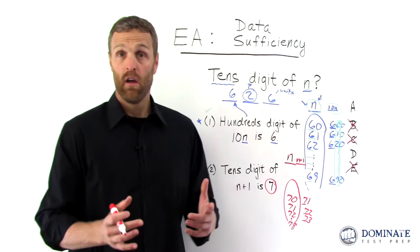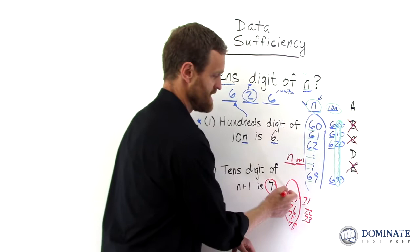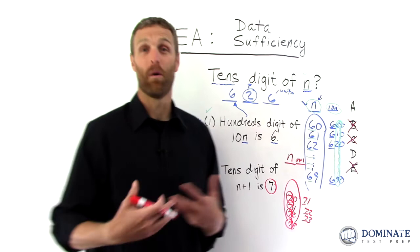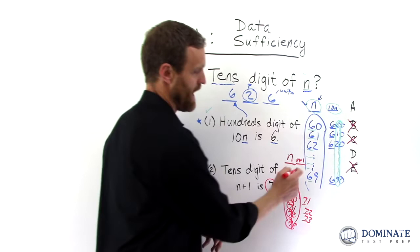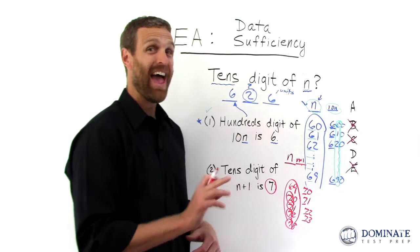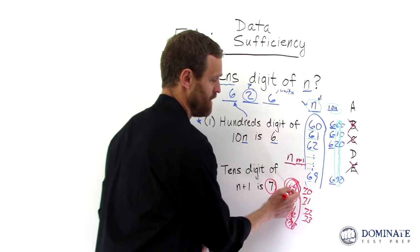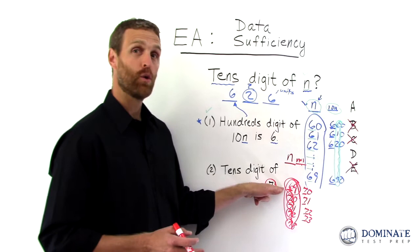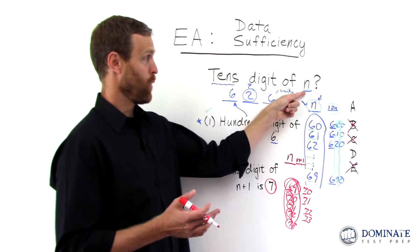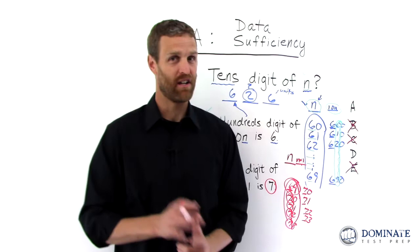So is that enough to answer the question? It certainly looks like the tens digit is 7 all the time. But what are we missing? What makes this a hard question? We need to play devil's advocate and realize that there's actually another possible value of n, 69, such that when I add 1 to it, it becomes 70. The tens digit of n plus 1 is in fact 7. And yet n itself only has a tens digit of 6. So now I have conflicting outcomes. I have some values of n for which the tens digit is 7, and 1 value of n for which the tens digit is 6. Because I don't definitively know whether the answer to the question is 6 or 7, I do not have enough information to definitively answer the question. Not sufficient.